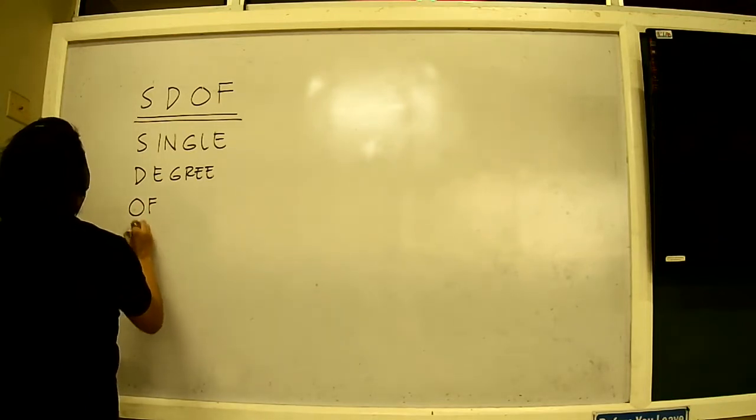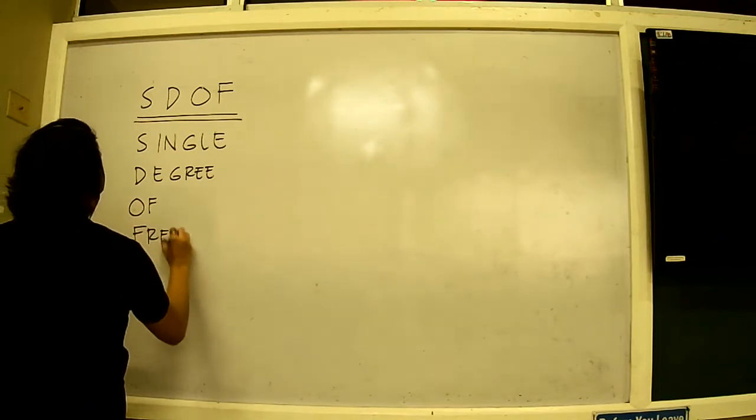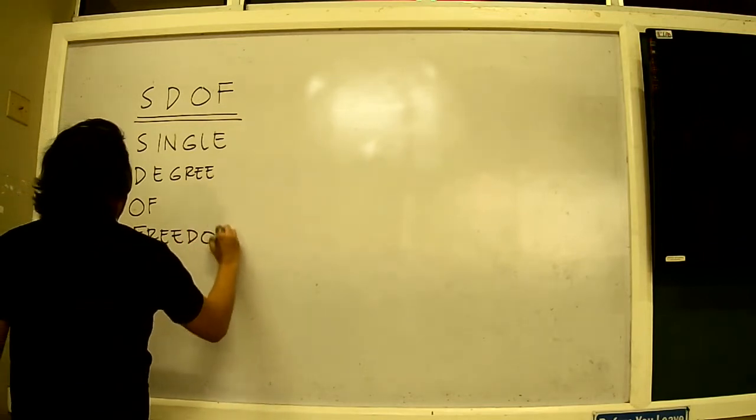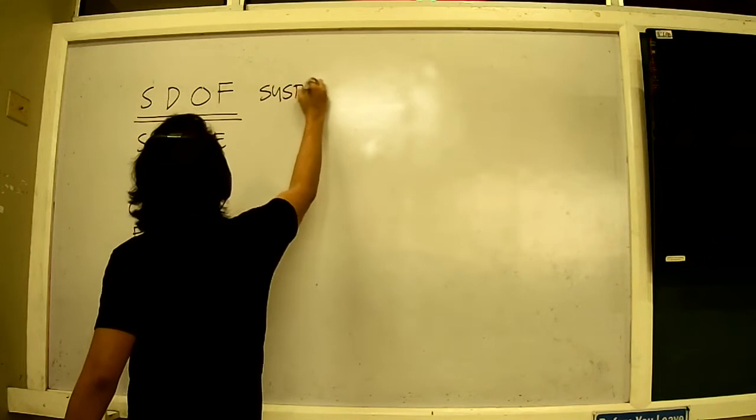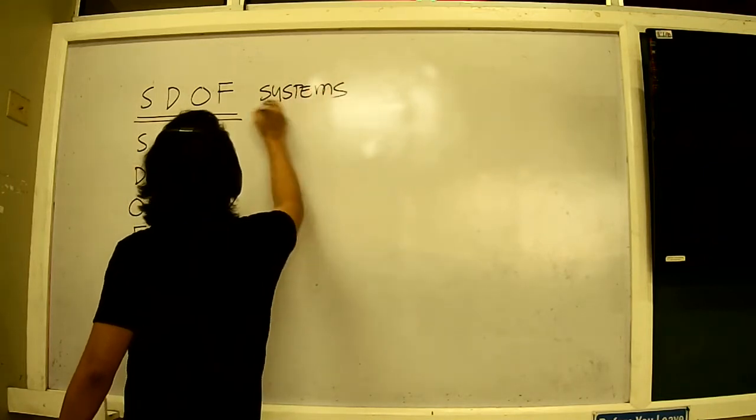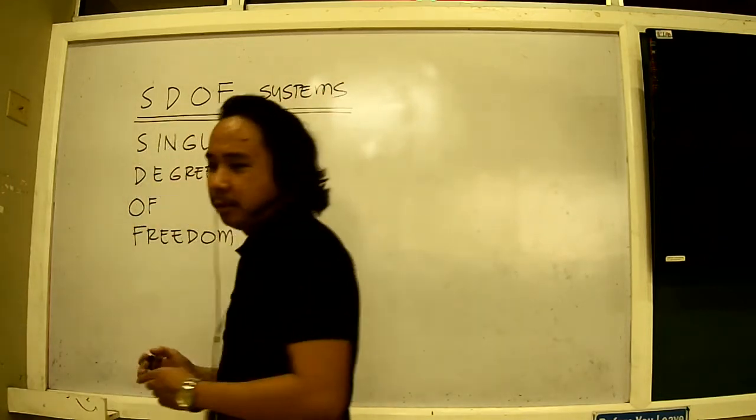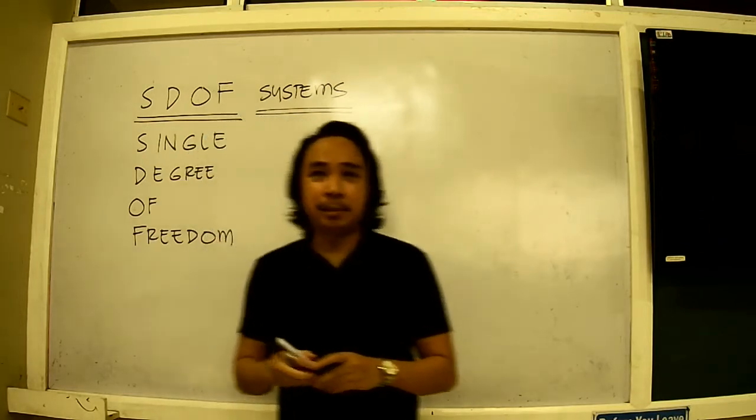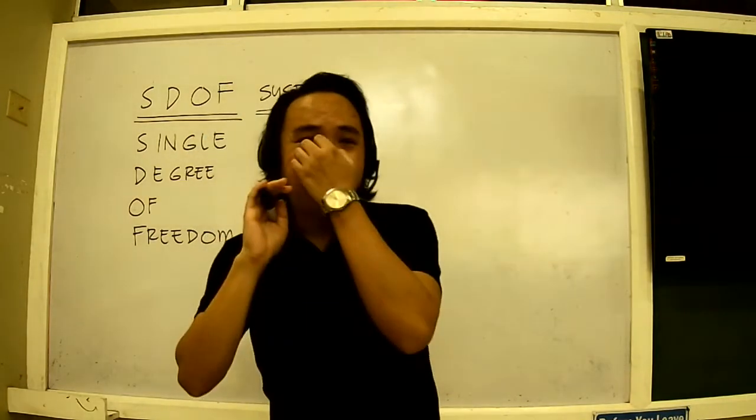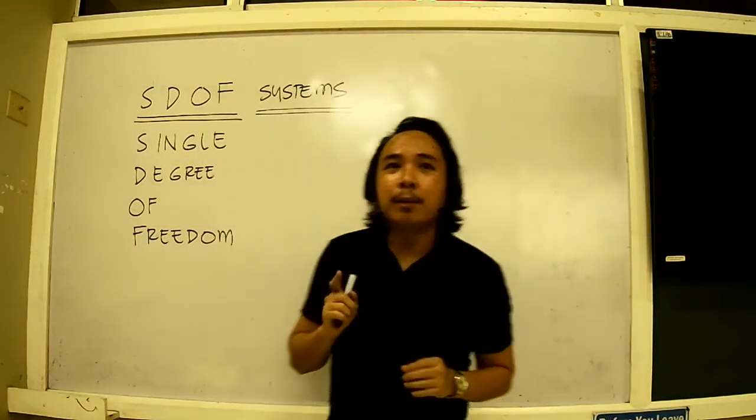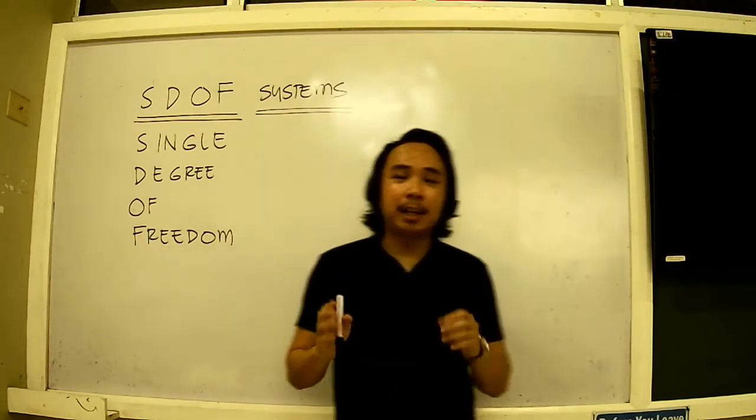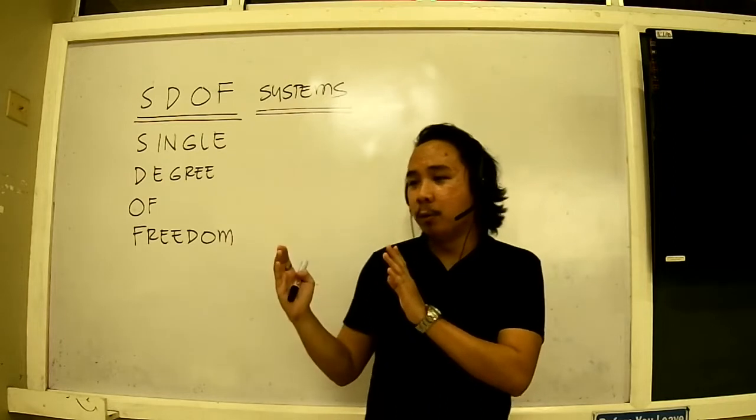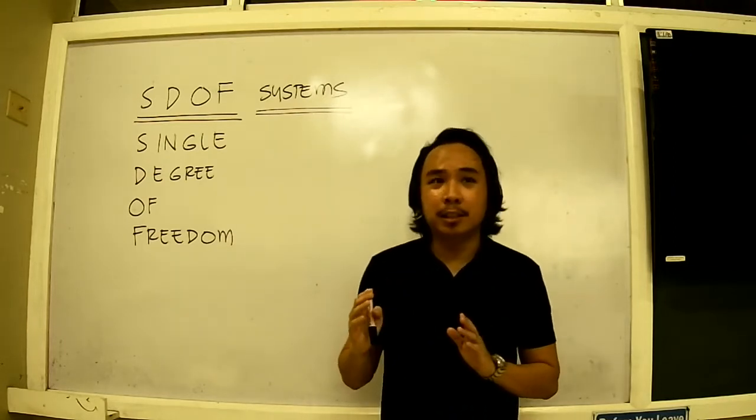SDOF systems. When you say single degree of freedom systems, that means there is a degree of freedom in one direction. That means our structure is free to move according to a designated direction.